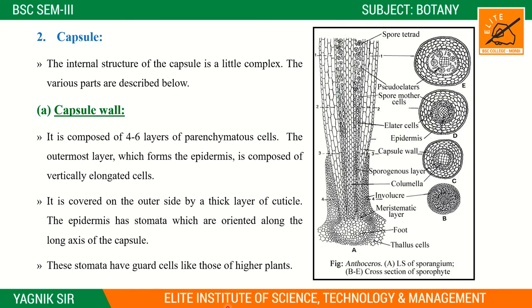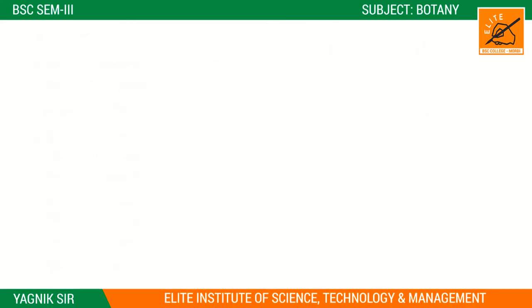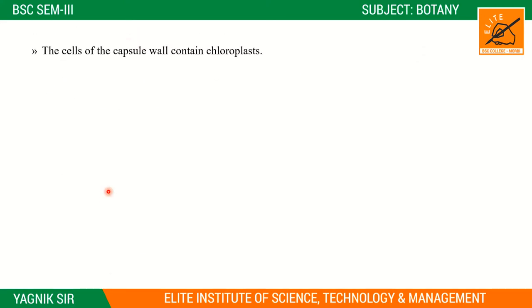These stomata have guard cells like those of higher plants. The guard cells keep the stomata functional — this type of structure with guard cells is similar to what we see in higher plants.